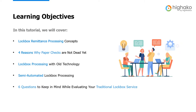The learning objectives in this tutorial are pretty simple. We're going to talk about the lockbox remittance process concepts, then cover the four reasons why paper checks are not dead yet, lockbox processing with old technology, and moving on to a semi-automatic lockbox process. Then we'll cover six questions to keep in mind when evaluating traditional lockbox services. There is a lot to consider now that technology has changed, and as I go through the presentation you'll hear some of the pros and cons of using a lockbox in today's day and age.